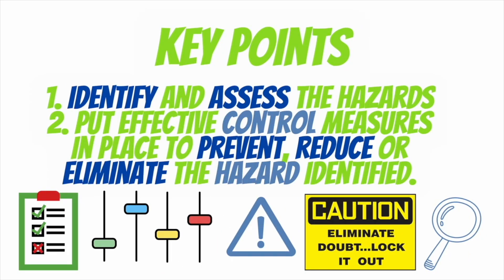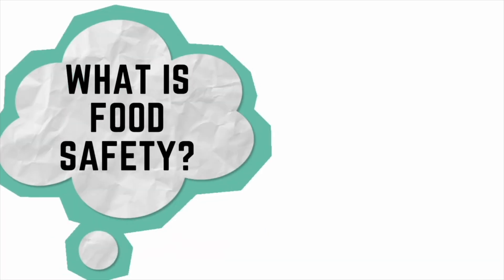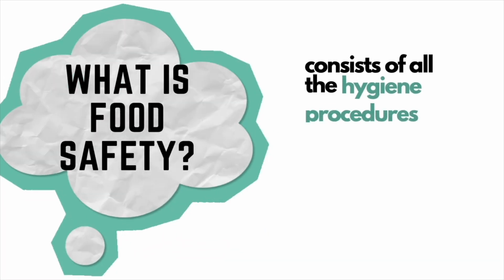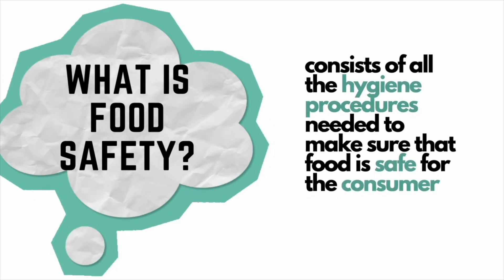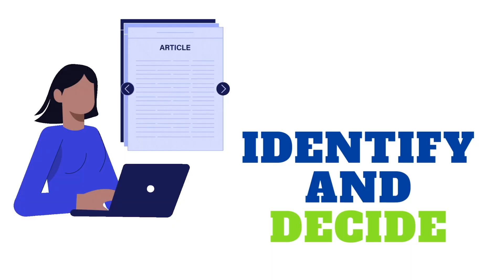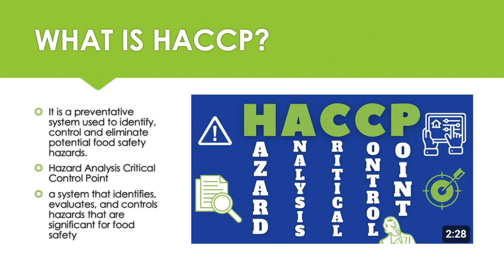The hazard evaluation is a determination of the degree of risk to the user from the identified hazard. Once the hazard is identified and evaluated, the team must identify all the hazards, decide which hazards need to be either eliminated or reduced to acceptable levels, consider the risks, assess the likelihood of either the survival or the multiplication of any microbiological hazards, assess the possible production or persistence in the food of toxins, chemical or physical hazards, and decide what control measures can be applied for each hazard.